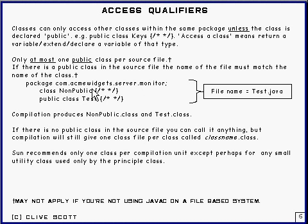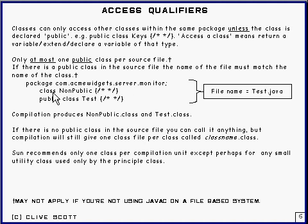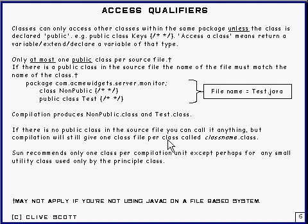Of course you can have a lot of source files that go to make up this package, so that's not a problem. When you compile it, what you get is two class files: one which is called non-public.class and one which is called test.class, corresponding to each of those classes. And if one of these was an interface instead — say 'interface non-public' instead of 'class non-public' — you'd still have non-public.class, because interfaces are really a sort of classless class. Now, if there's no public class in the source file, then you can call it anything you want, but the compilation will still produce class files determined by the class names of the classes or interfaces inside the source.